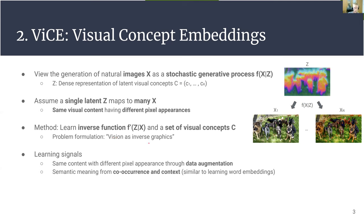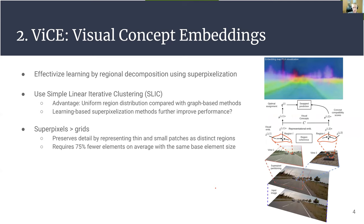This is possible because there are two learning signals. First, the same content is known to be represented by different pixel appearances through data augmentation. Second, it's also possible to elucidate semantic meaning from co-occurrence and contextual patterns, similar to how word embeddings are learned. We effectuate the process of learning these embeddings by decomposing the image into regionally coherent regions by superpixelization, and in particular use the SLIC method.